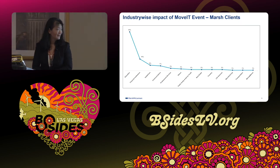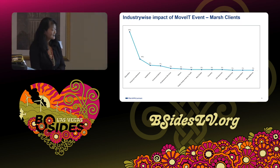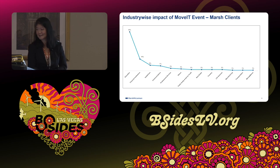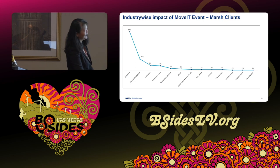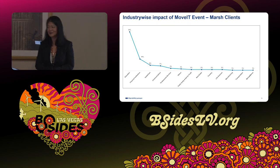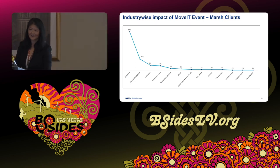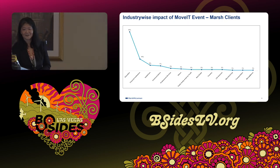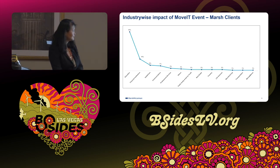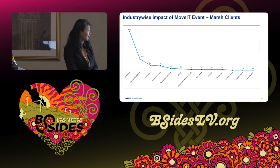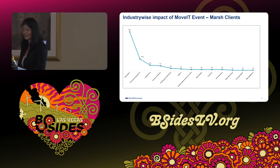On the MOVEit vulnerability: it was exploited in June, and by July claims started coming in. As of yesterday, we have about 117 claims, mostly hitting education, financial, healthcare, and communications sectors.